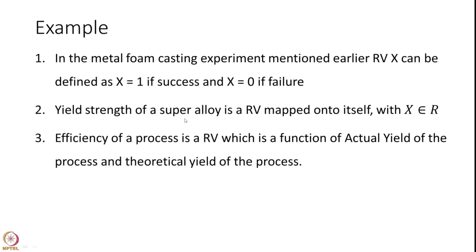The yield strength of a superalloy or any metal is a random variable mapped onto itself because yield strength is already numeric. The efficiency of a process is also a random variable — for example, if you take the ratio of the actual yield of the process to the theoretical yield of the process and call it efficiency, that is also a random variable.